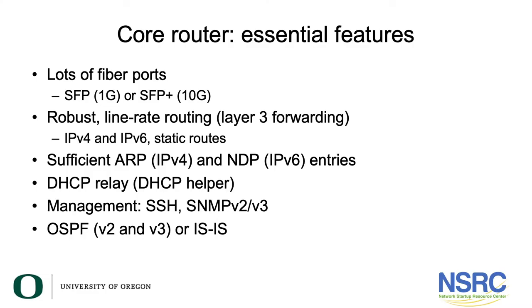We will now look at how we go about choosing a core router for our campus. As we did with the switches, we'll look at the essential features first. We need lots of fiber ports, either 1 gig or 10 gig — SFP or SFP+. In fact, some campuses are now looking at even 25 gig, 40 gig, or even 100 gig as the price of those ports starts reducing.